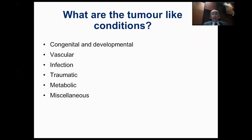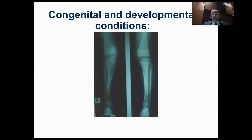We'll use the traditional classification: congenital and developmental conditions, vascular conditions, infections, traumatic conditions, metabolic conditions, and miscellaneous. Starting with congenital and developmental conditions — if you analyze this X-ray, you'll find an abnormal lesion in the epiphysis of the distal femur and proximal tibia.